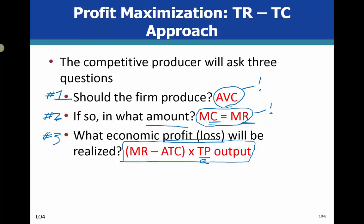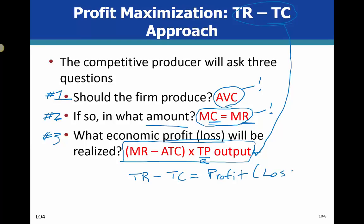Question three — profit or loss — is answered by: marginal revenue minus average total cost, times the total quantity of output. Another way to state this is total revenue minus total cost, which equals either profit or loss. These two formulations are essentially the same equation: the first is on a per-unit basis, so you multiply at the end to get total profit or total loss.